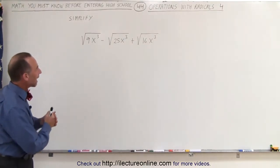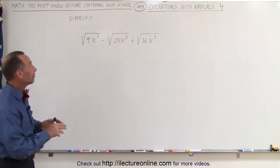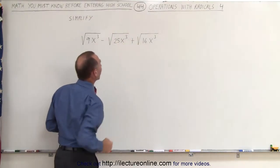Welcome to ElectronLine. Here we have to combine these three radicals. Now again, we can only do that if the quantity underneath the radical is exactly the same. And of course, in this case, that's not true.